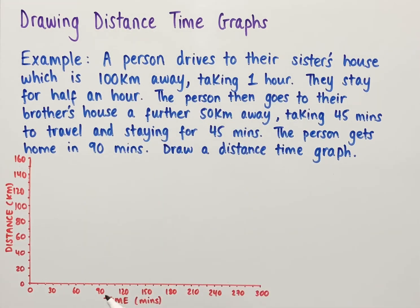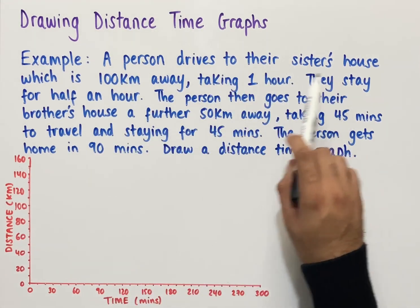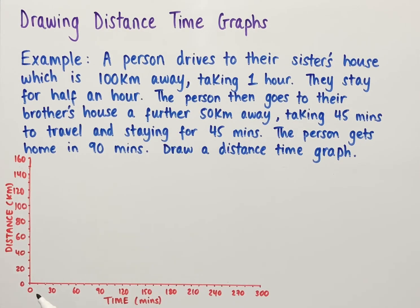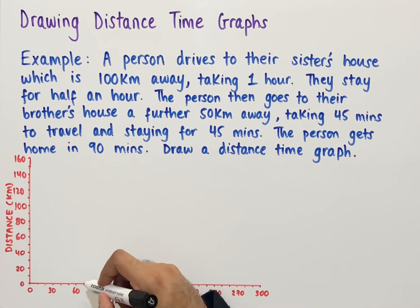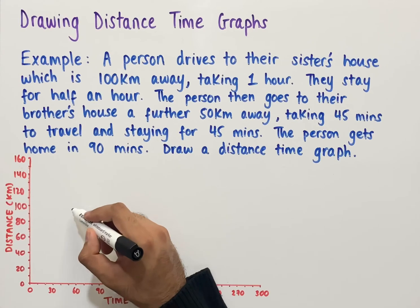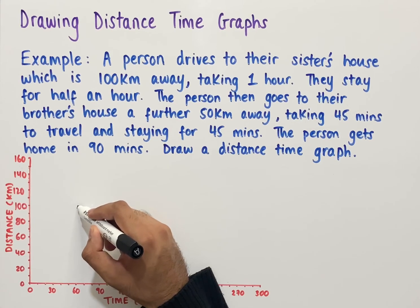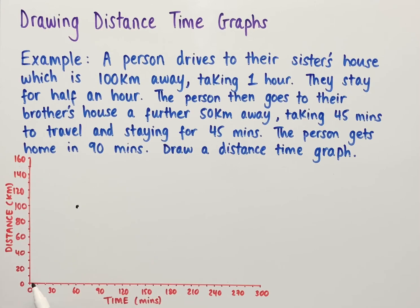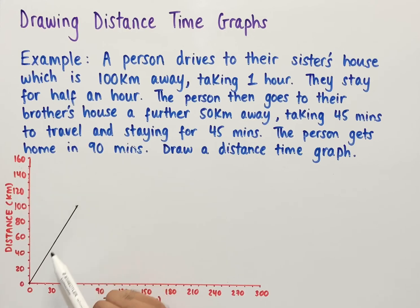Working through sentence by sentence: in the first sentence we're told a person drives to their sister's house which is 100 kilometers away, and this takes one hour, which is 60 minutes. So we go across to 60 minutes and up to 100 kilometers and plot a point at (60, 100). Since we're starting at the person's home, the graph begins at the origin. Connecting the two points gives us a straight line — that's the first part of the journey.